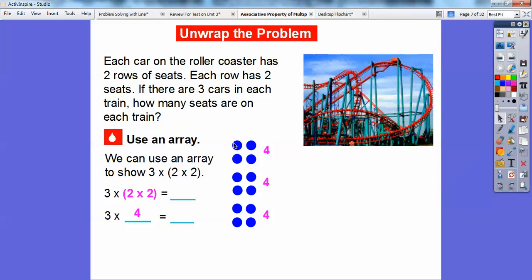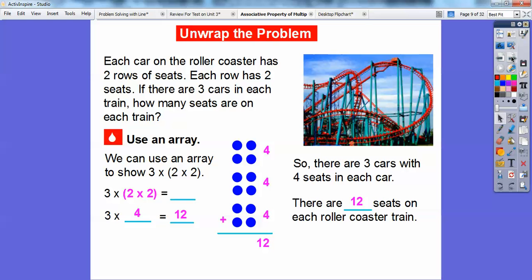Well, each 2 by 2 is equal to 4. See, this is 2 times 2. You can just add them up also, which equals 4. This is 2 times 2, and this is 2 times 2. So 3 times 4 is just going to be the addition of all these 4s right here. So 3 times 4, and a lot of people already know 3 times 4 equals 12. So there's three cars that have four seats in each car, and there are 12 seats on each roller coaster train. So we know that the answer is going to be 12.